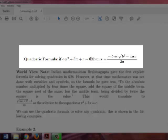Right here we have a general quadratic equation: ax² + bx + c = 0.